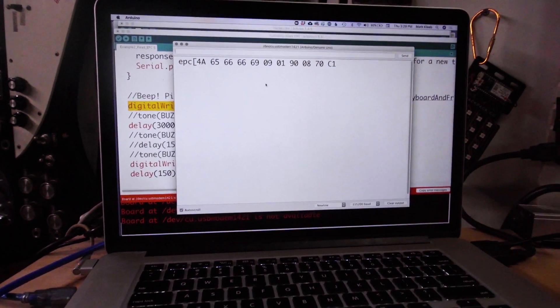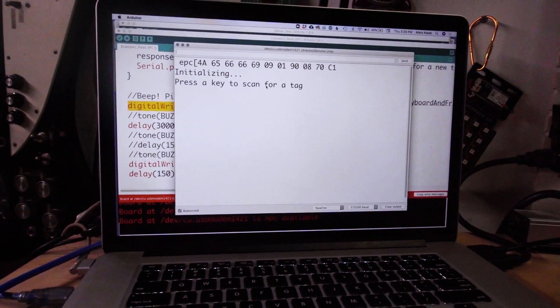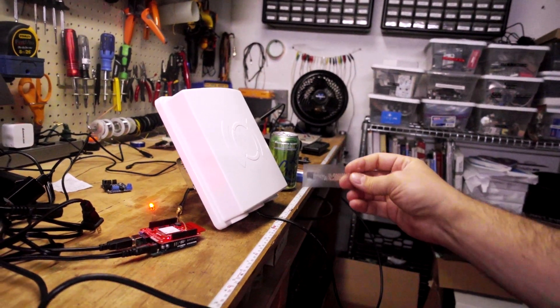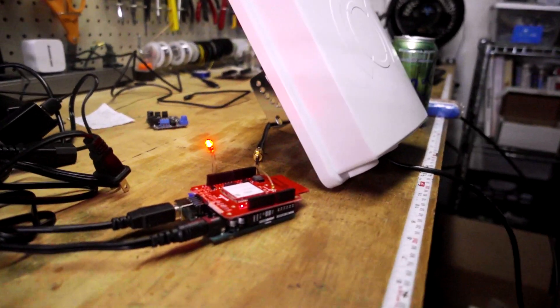So if I start scanning and I bring an RFID tag close to the antenna, I can turn on the LED.